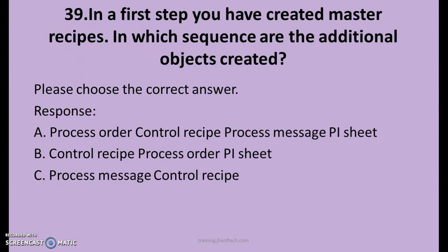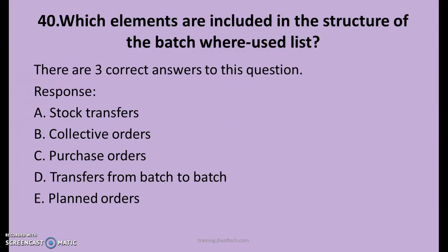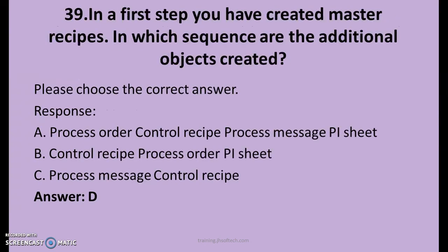39th question. In a first step, you have created master recipes. In which sequence are the additional objects created? A. Process Order, Control Recipe, Process Message, PI Sheet. B. Control Recipe, Process Order, PI Sheet. C. Process Message, Control Recipe. The right answer is D, but the D option text was not captured — this will be mentioned at the end.